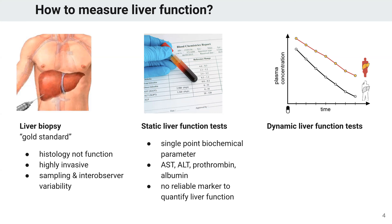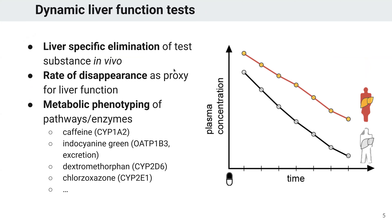What we use instead is a third approach: the so-called dynamic liver function tests. What this does is basically determine liver function by using a test compound which is specifically cleared by the liver. This allows measuring liver function in vivo by giving a test substance and then measuring the rate of disappearance of this test substance in the plasma or rate of appearance in the urine. Depending on the pathway you want to test, there are different substances — for instance, you can use caffeine to test CYP1A2, indocyanine green for the OATP, dextromethorphan for CYP2D6, or chlorzoxazone to test CYP2E1.